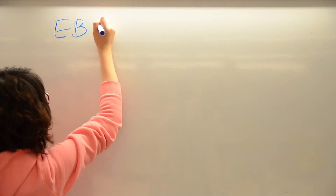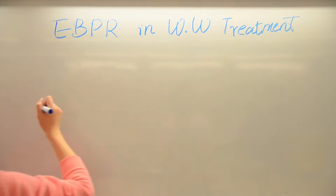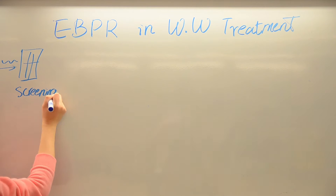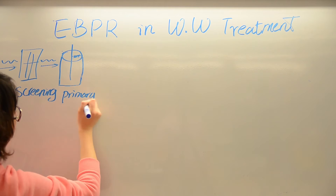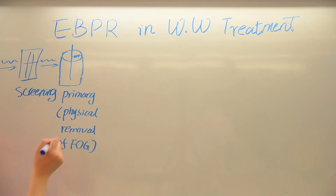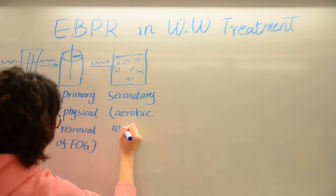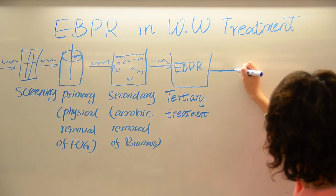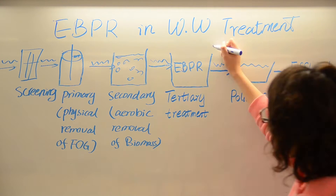To understand the process of EBPR, let's first look at the entire wastewater treatment process. First, the influent water is screened for large objects and grit, followed by primary treatment, which is the physical removal of solids. Next is the secondary treatment, which removes biomass. Then, EBPR can be used as a third step, before the effluent is finally polished and discharged.